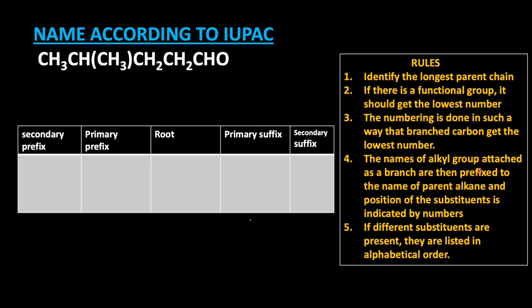The name of the alkyl group attached as a branch is prefixed to the name of the parent alkane, and the position of the substituent is indicated by numbers. So we need to start giving the numbering. Before numbering, let us first draw the structure of the given compound: CH3 CH — and in this carbon, CH3, that is a methyl group, is attached.